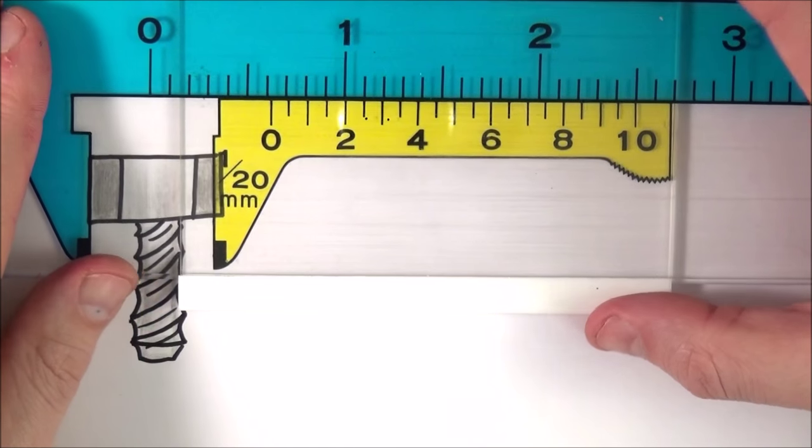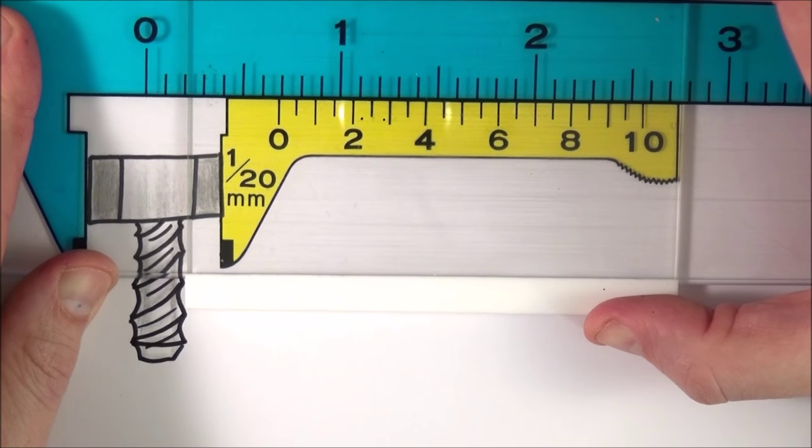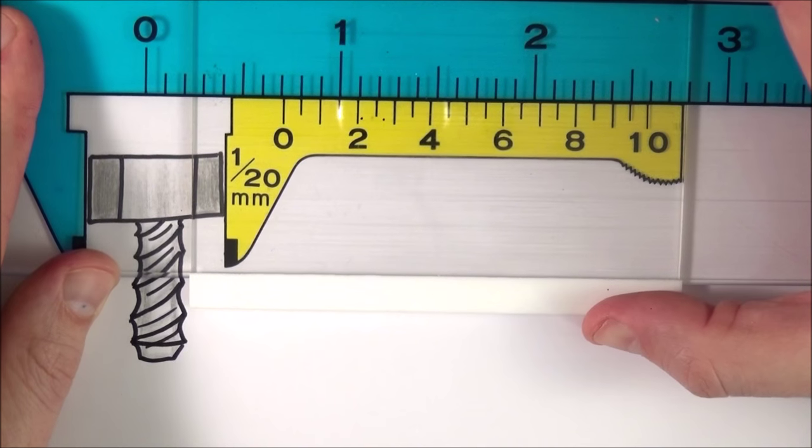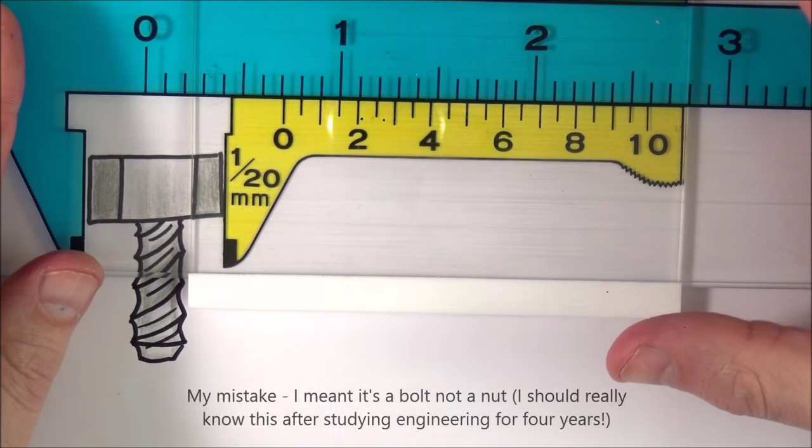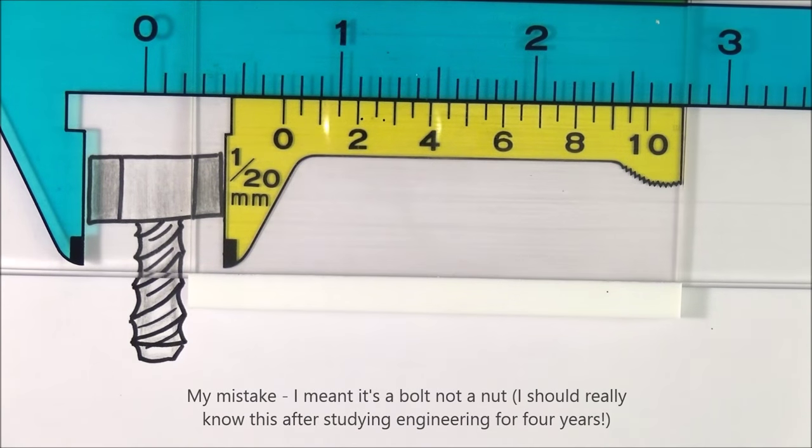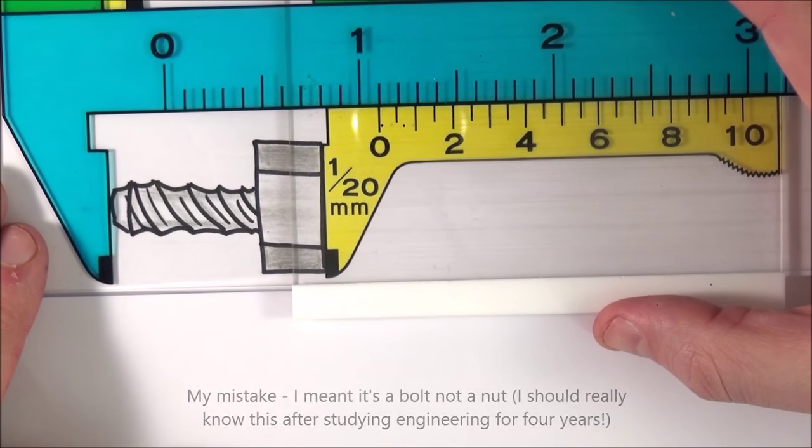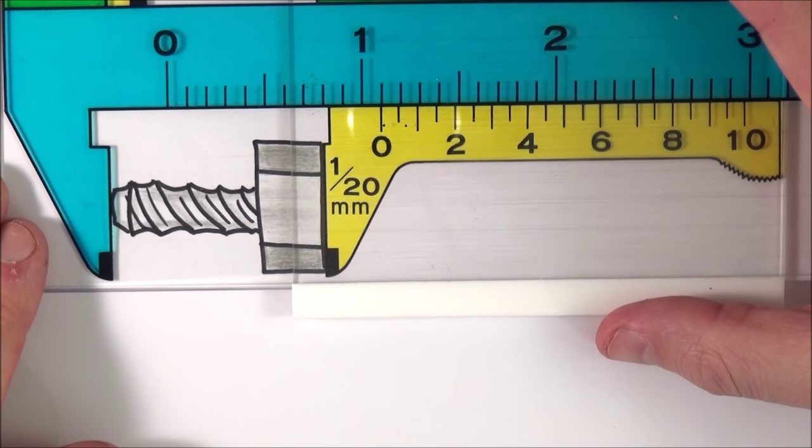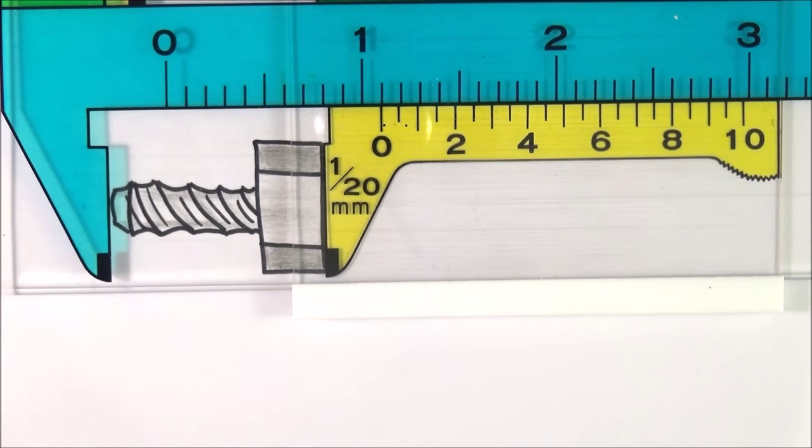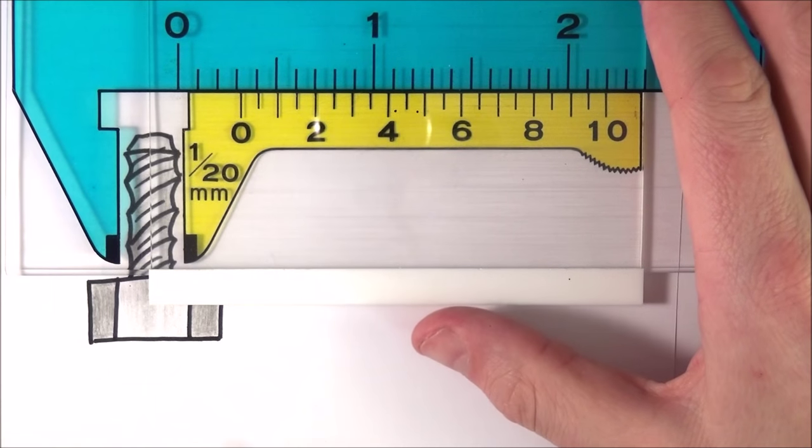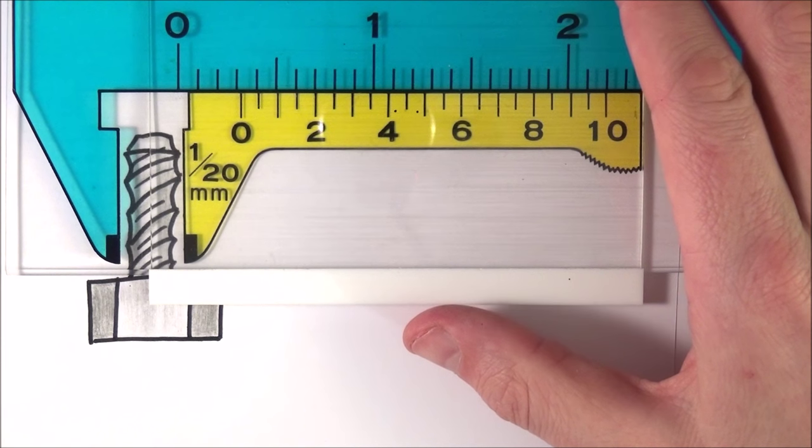This is the first one—have a go at looking at what is the diameter of the end of this nut. Secondly, what is the length of it? And finally, what is the diameter of the bottom part of the thread there?